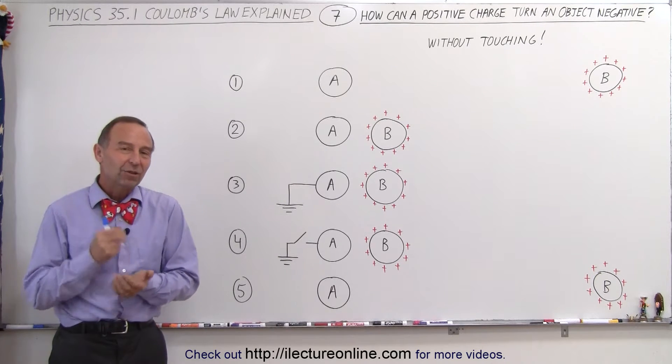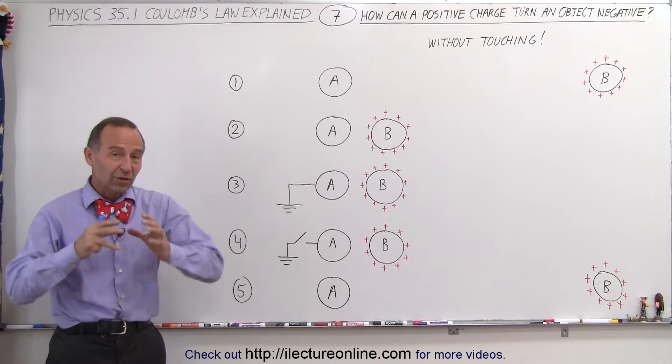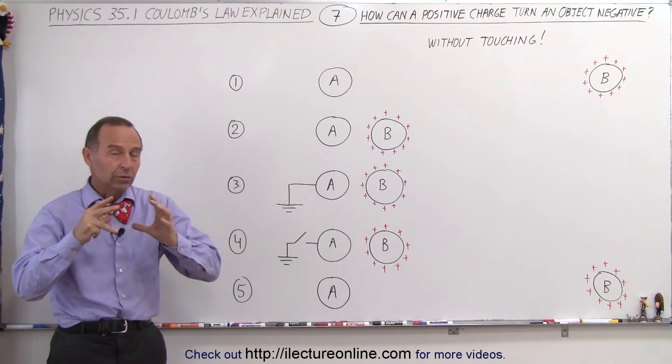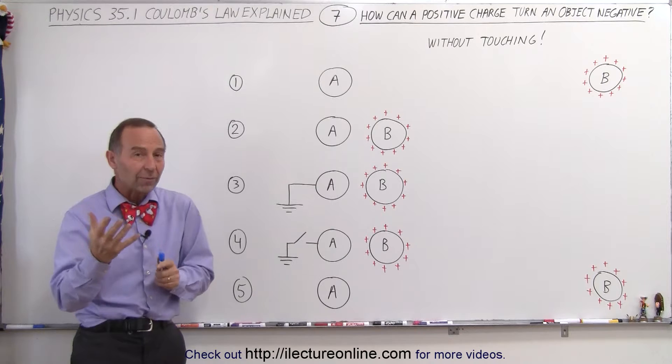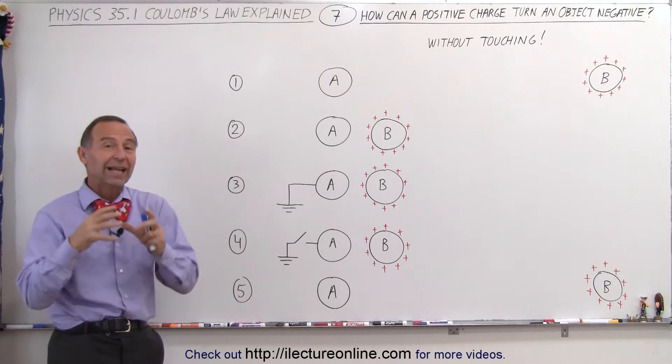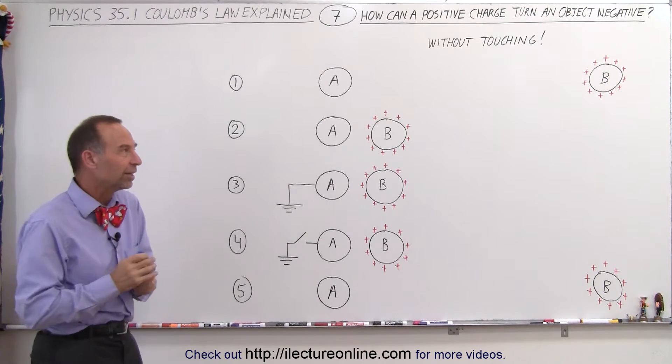Welcome to ElectronLine. Is it possible to turn an object, which is a metal sphere that is neutral, into a metal sphere that is negatively charged with another object, another metal sphere that has an excess of positive charge on it?